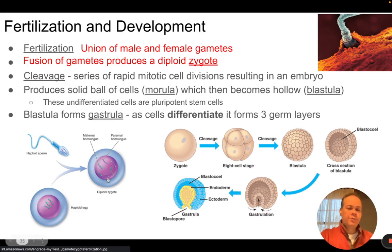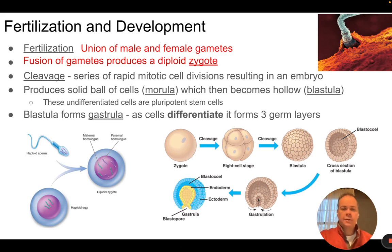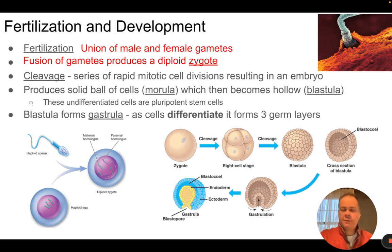Once the zygote has been formed, it starts to grow in size and number of cells. That process is called cleavage — the splitting of the cell. The zygote goes through mitosis: one cell divides into two, those two become four, then eight, then sixteen, with rapid growth in cell number. At first all of those cells are identical — undifferentiated cells, generic stem cells without specific functions.